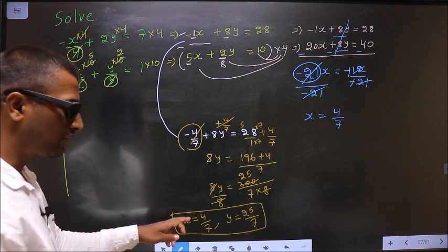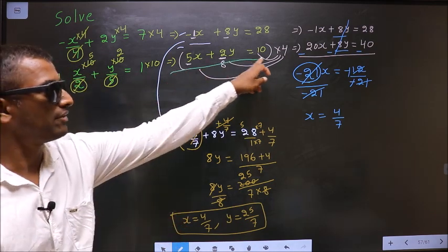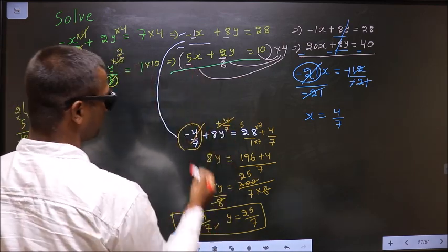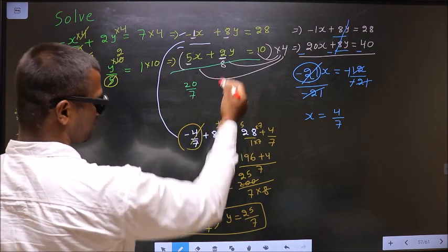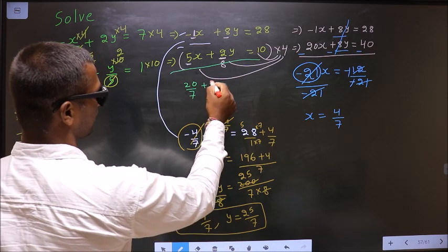Now, to confirm the answer, replace this in this equation. So 5 into x, 5 into 4/7 is 20/7. Plus 2 into y, 2 into 25/7 is 50/7.